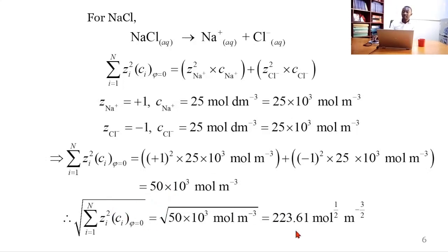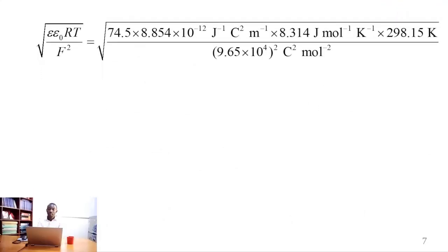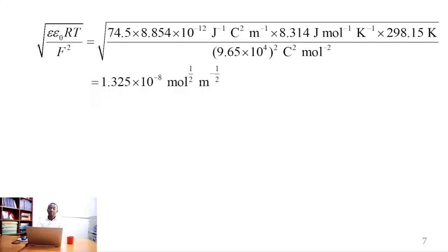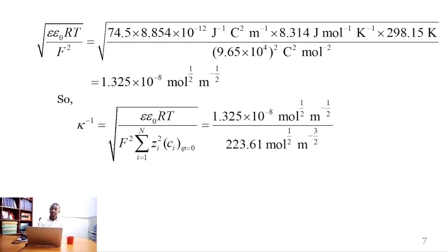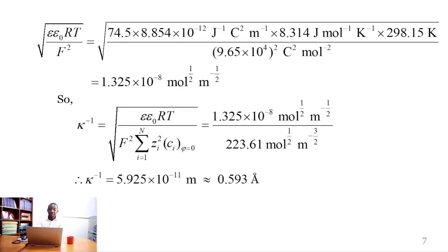Taking the square root gives 223.61 mol^(1/2)·m^(−3/2). Substituting the other parameters into the remaining part of the formula gives a result that evaluates to 1.325×10⁻⁸ mol^(1/2)·m^(1/2). Putting those together gives a result that evaluates to 5.925×10⁻¹¹ m, which is approximately 0.593 Å as the Debye length for sodium chloride.